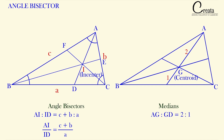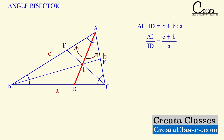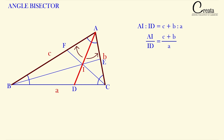Just as the centroid divides the median in the ratio 2:1, the incenter I divides the angle bisector AD in the ratio (b + c) : a. One important thing to note: the angle bisector AD lies between sides b and c, so we take the sum b + c over the third side a.